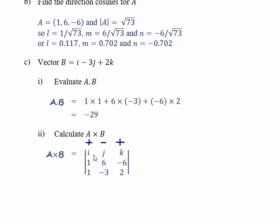So, to expand this determinant, we take out the row containing the I and the column containing the I, and we have 6 times 2 minus minus 6 times minus 3. Then we take out the row containing the J and the column containing the J, and remember the minus sign. And now we're going to have 1 times 2 minus minus 6 times 1. And then we take out the row containing the K and the column containing the K. And we're going to get 1 times minus 3 minus 6 times 1.